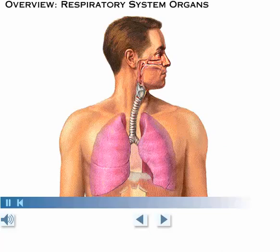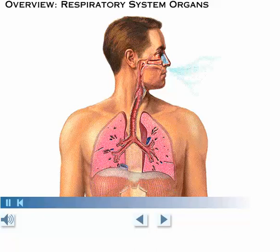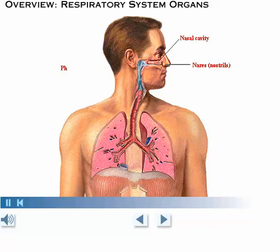Let's review the organs of the respiratory system by following the flow of air. Air enters the nose by passing through two openings called the nares or nostrils. Within the nose, the air passes through the nasal cavity and then travels through the pharynx, a muscular tube which carries both food and air throughout most of its length.